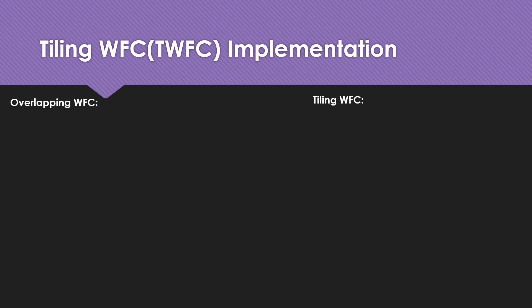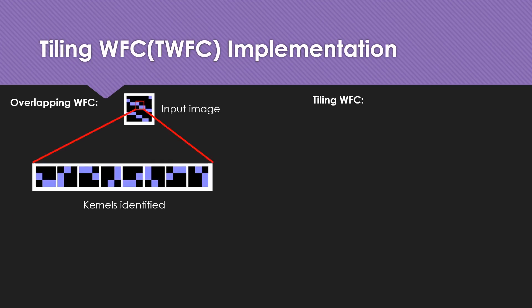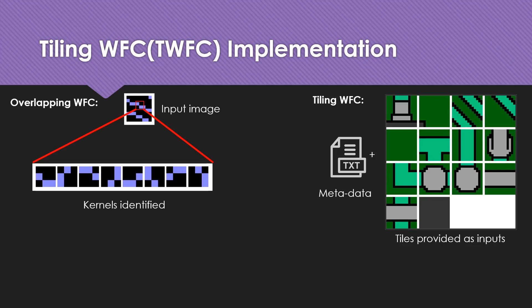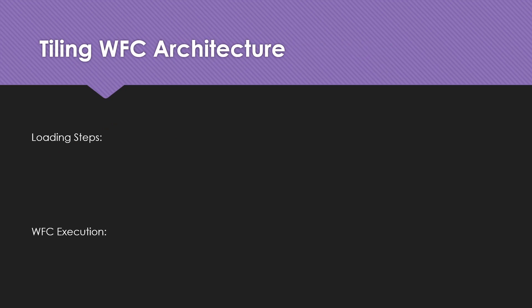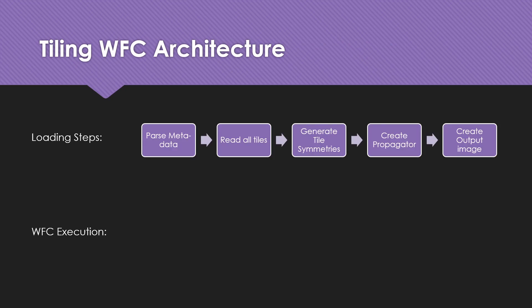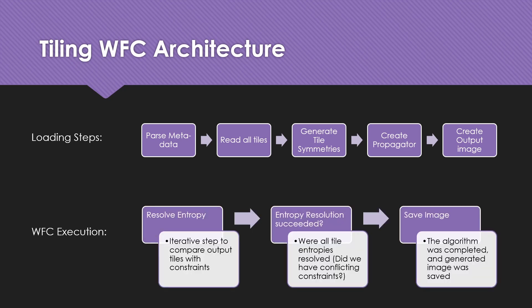Tiling wave function collapse is different in that OWFC takes an input image and identifies kernels, whereas in the tiling case, we take metadata and a bunch of tile images as inputs. The architecture still consists of loading steps and execution steps. The loading steps now involve parsing metadata, reading all possible tiles, generating tile symmetries, creating the propagator, and creating the output image. The execution resolves tile entropy instead of pixel entropy, and on successful resolution, saves the image.